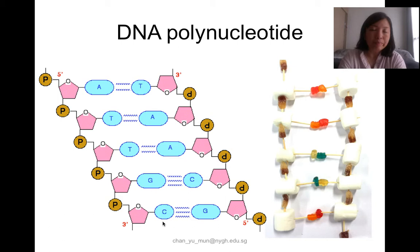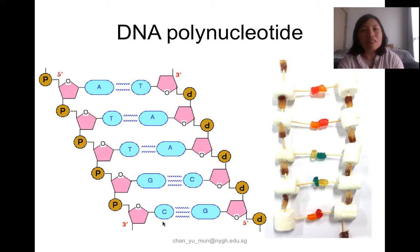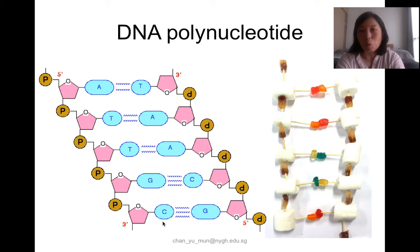You may have seen the DNA bridge at Marina Bay or heard the term 'double helix' used to describe the general shape of a DNA molecule. The term 'double' gives you a hint: a DNA molecule consists of not one but two polynucleotide strands. That is why we call it a double helix.